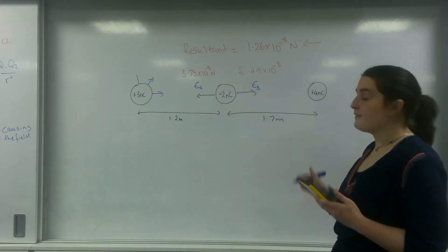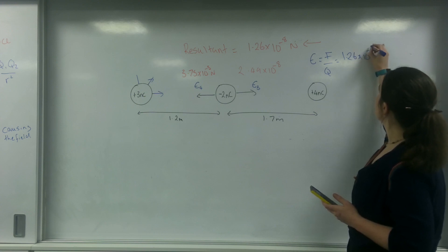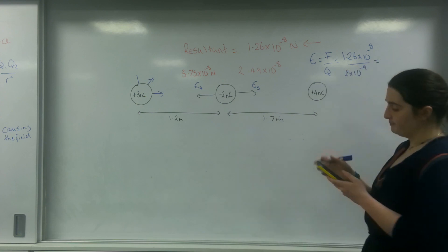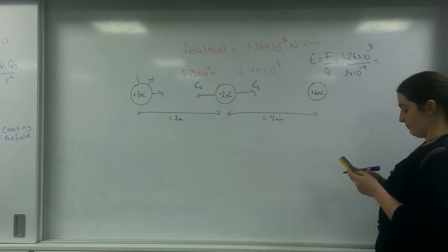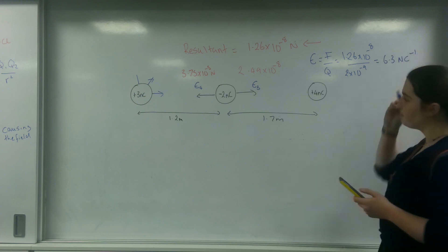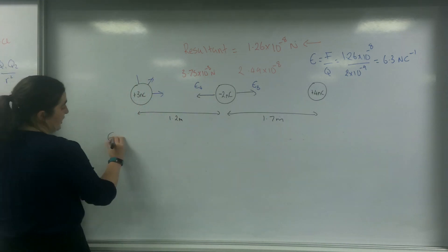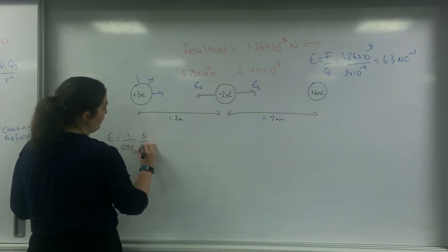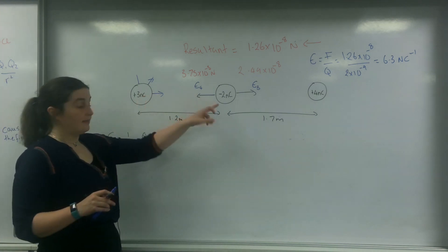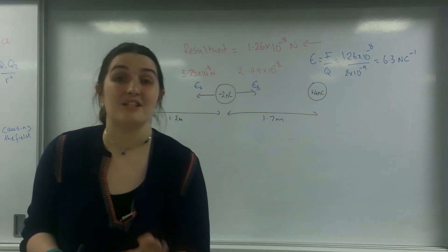Using the basic field strength formula, E equals force over charge: 1.26 times 10 to the minus 8 over the charge of 2 times 10 to the minus 9, giving an answer of 6.3 Newtons per Coulomb. Now I'm going to use the formula E equals 1 over 4 pi epsilon 0, Q over R squared, to find the electric field strength from each charge at the point, and then find the resultant electric field strength using vectors.